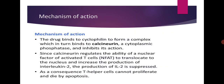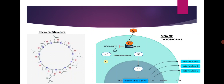Mechanism of action: Cyclosporine binds to cyclophilin to form a complex, which in turn binds to calcineurin, a cytoplasmic phosphatase, and inhibits its action. Since calcineurin regulates the ability of the nuclear factor of activated T-cells (NFAT) to translocate to the nucleus and increase the production of interleukin-2, the production of interleukin-2 is suppressed. As a consequence, T-helper cells cannot proliferate and die by apoptosis. A chemical structure and diagrammatic mechanism are shown on screen.